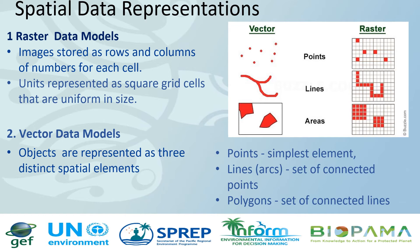In order to visualize natural phenomena, one must first determine how to best represent geographic space. There are two primary data models used in GIS: raster data models and vector data models. Raster data models are images stored as rows and columns, where units are represented as square grid cells that are uniform in size. In contrast, vector data models are objects represented as three distinct spatial elements: points, lines, and polygons.